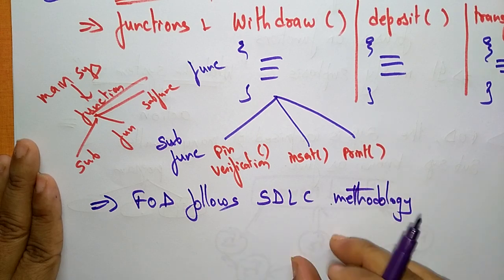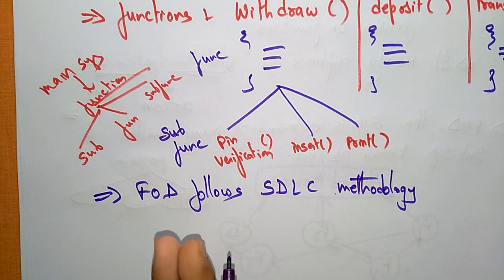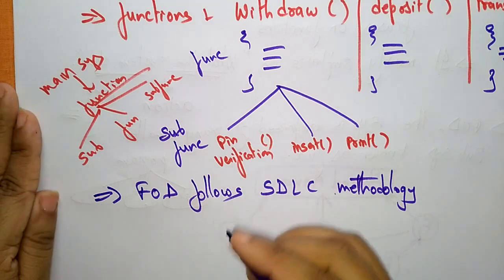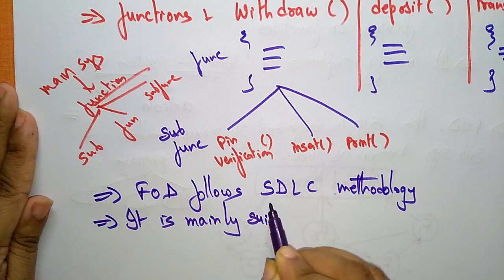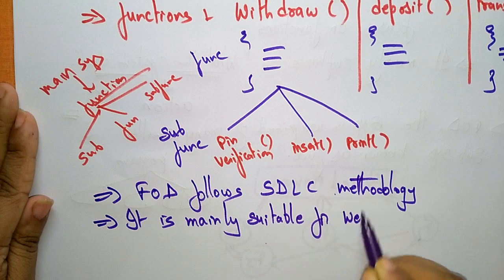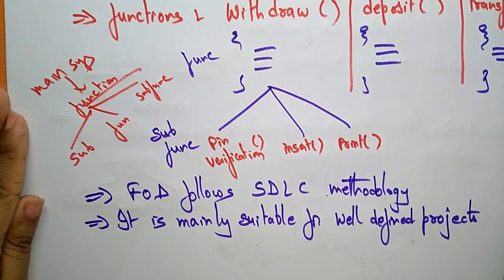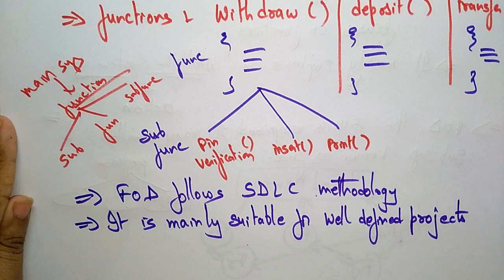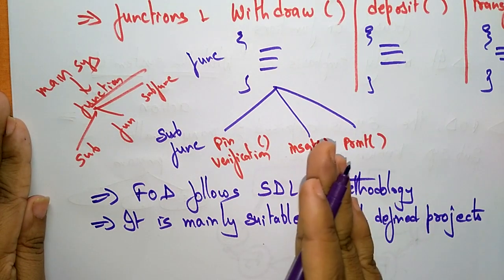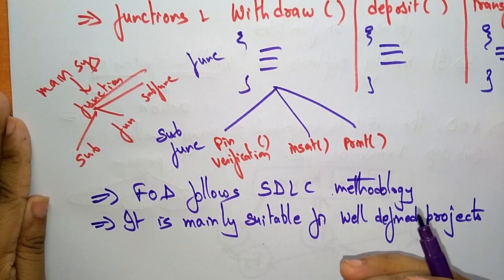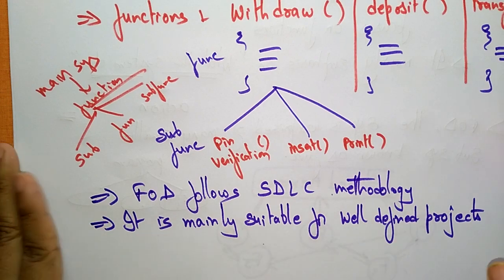It follows the software development life cycle methodology. The key focus of function oriented design is on functions. It is mainly suitable for well-defined projects with stable user requirements. The high level of risk is there in FOD, and the reusability is low in FOD.